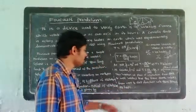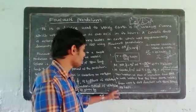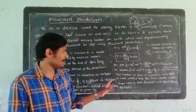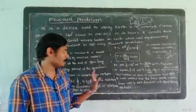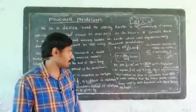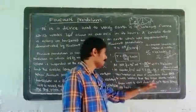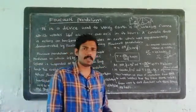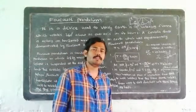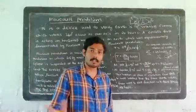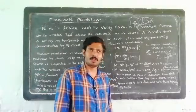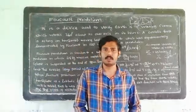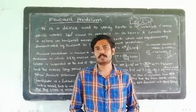We can see that the rotation of the plane of oscillation from east to west verifies that the Earth, as a frame, rotates from west to east with a time period of 24 hours. This confirms that the Earth is a rotating frame. This is the Coriolis force, centrifugal force — these are the fictitious forces in non-inertial systems.